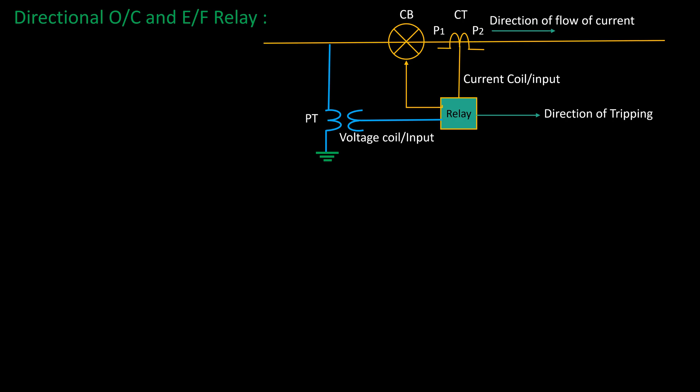Directional protection responds to flow of power in a definite direction with reference to the location of the CT and PT. Directional relays respond to the magnitude and direction of power or current applied at their terminal. Directional relay operates when direction of flow of current is same in direction of tripping.